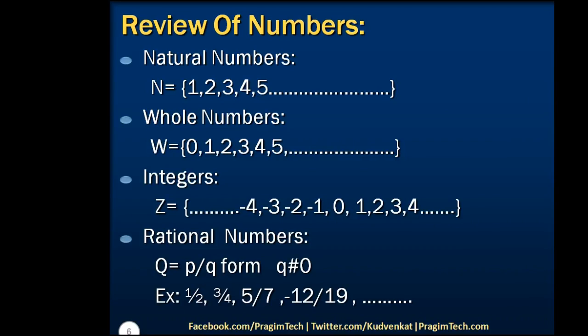Let's see various ways of representation of numbers. Natural numbers are numbers that start from 1 and extend up to infinity, and they are represented with the letter N. Note that 0 is missing in natural numbers. When 0 is included with the natural numbers, such numbers are known as whole numbers, represented with the letter W.